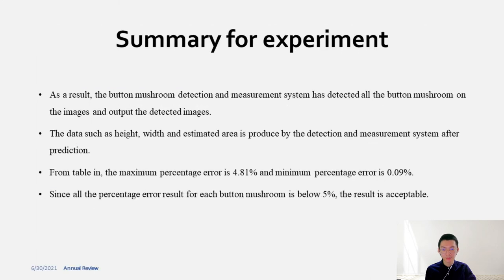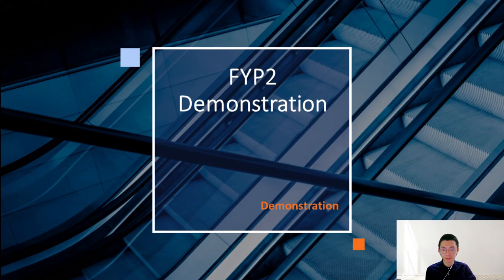As a result, the button mushroom detection and measurement system has detected all the button mushrooms on the image and output the detection image. The data such as height, width, and estimated area is produced by the system after prediction. From the table, the maximum percentage error is 4.81% and minimum percentage error is 0.09%. Since all the percentage errors for each button mushroom are below 5%, the result is acceptable.